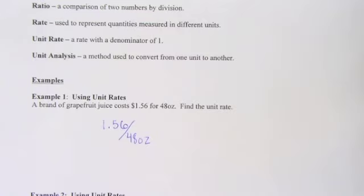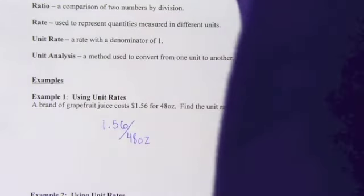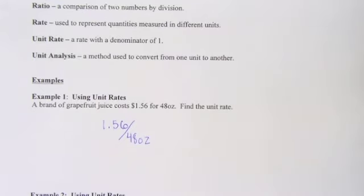In order to get a unit rate, all we do is divide our numbers. So what we want to do is we want to divide the money per 48 ounces so we can know how much it costs for just one ounce. This is a skill that a lot of times can be used in a grocery store when you're trying to figure out what's a better bargain.